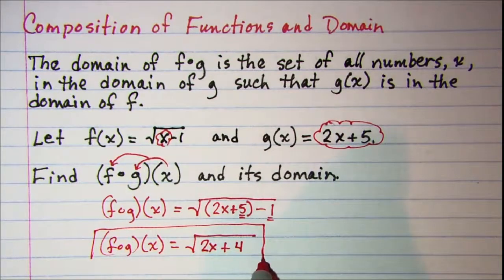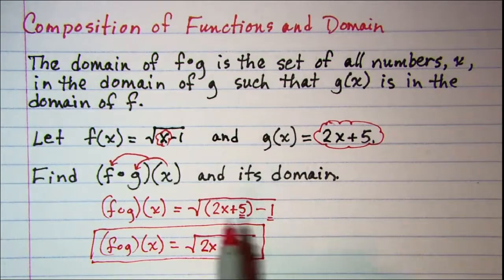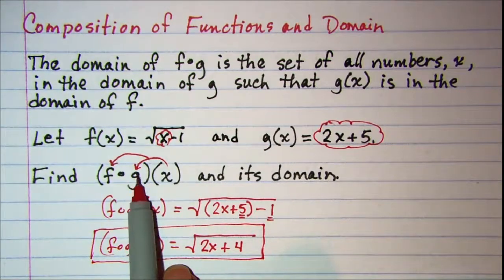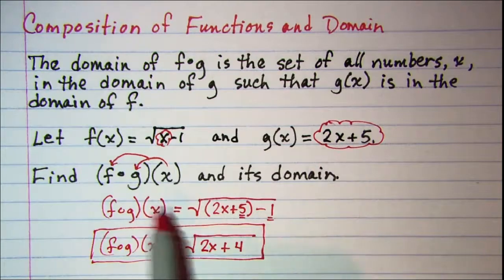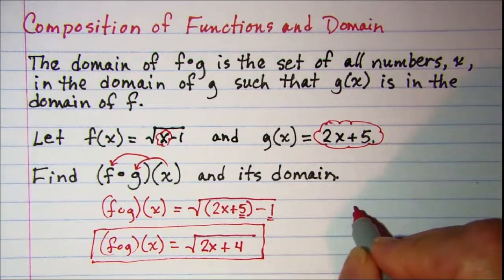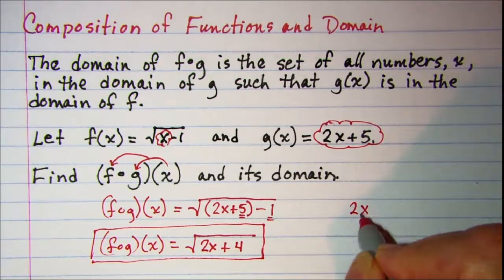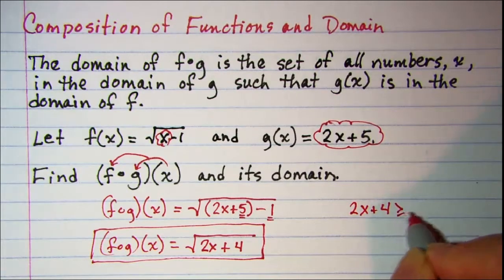So that's our composition function and then the domain of g I already said was all real numbers. So all I need to do is find the domain of f composition g and we know that the radicand must be greater than or equal to 0.